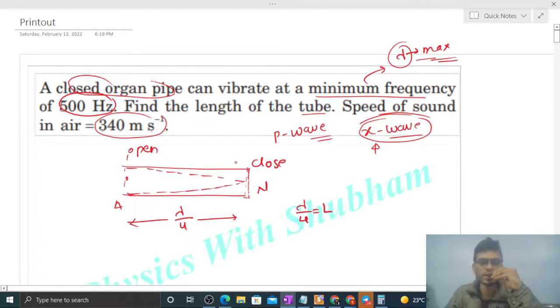Now frequency is equal to speed divided by wavelength.